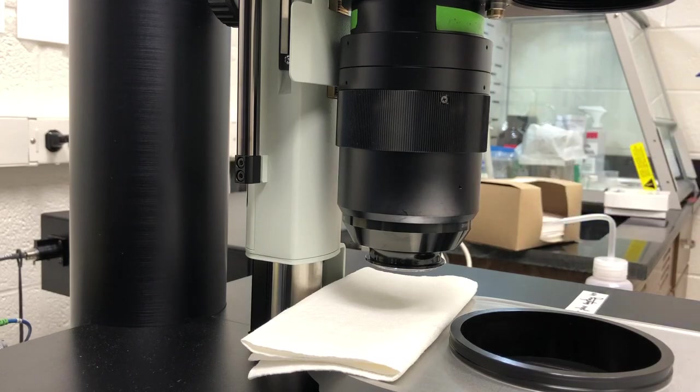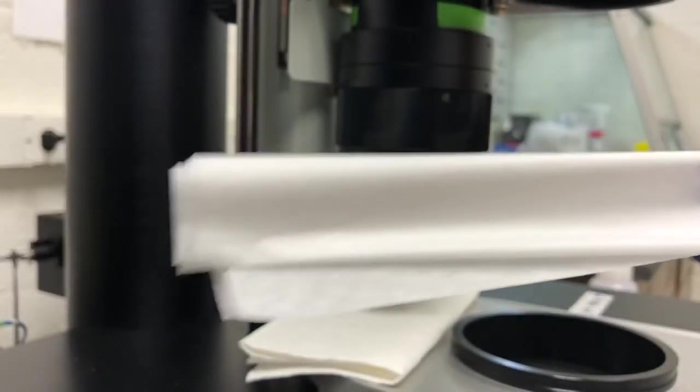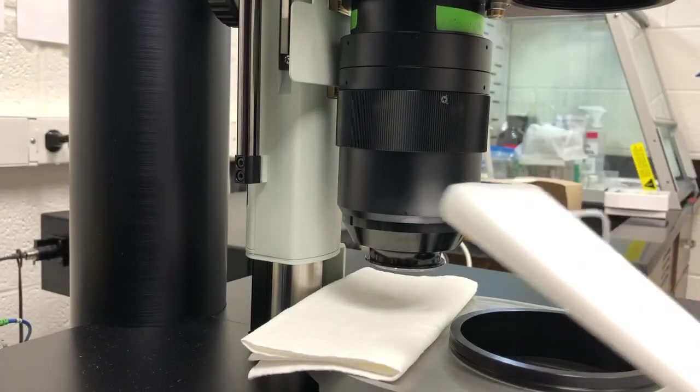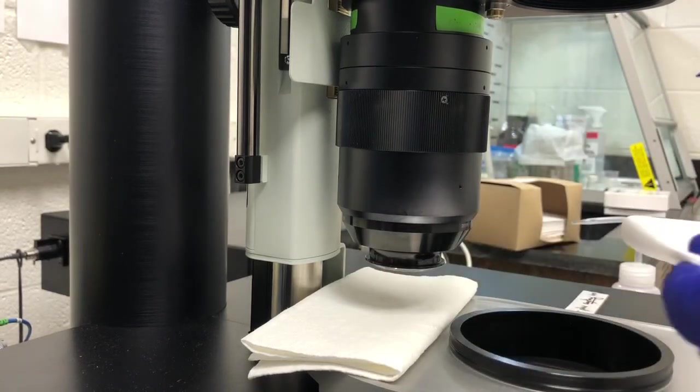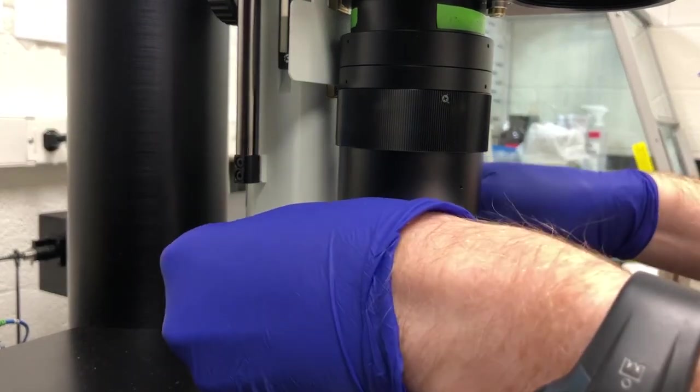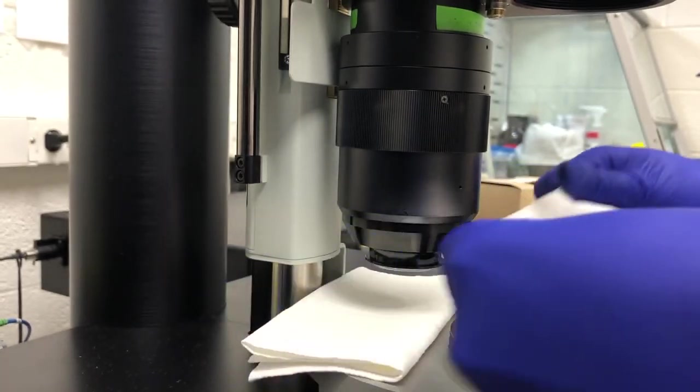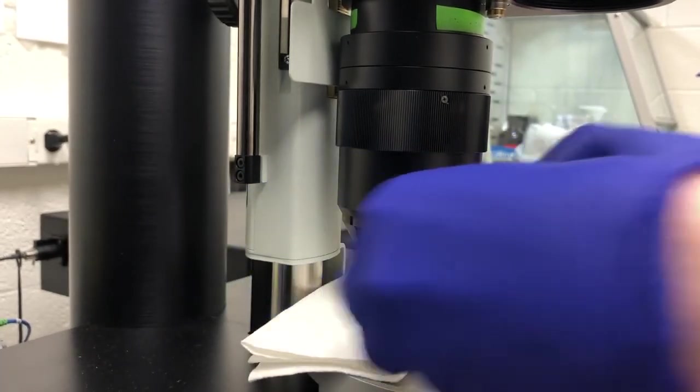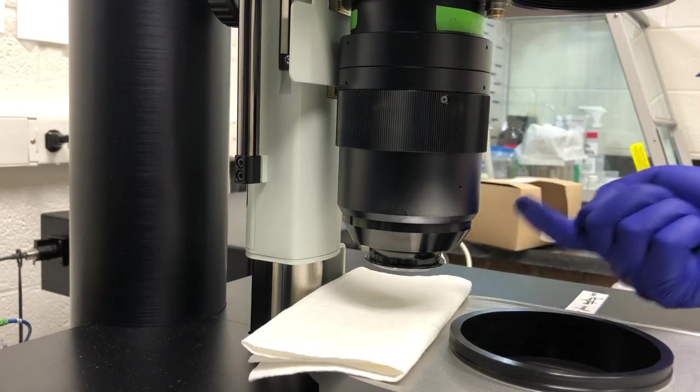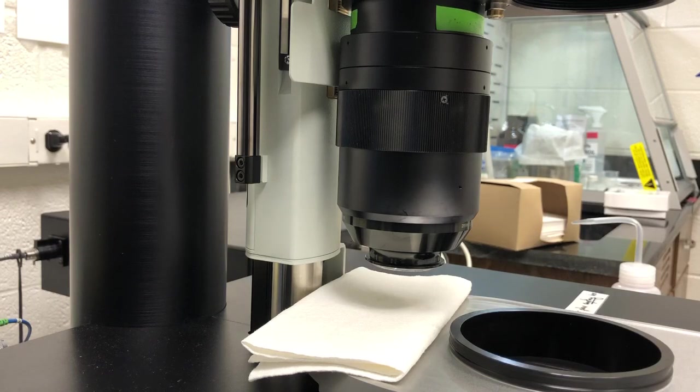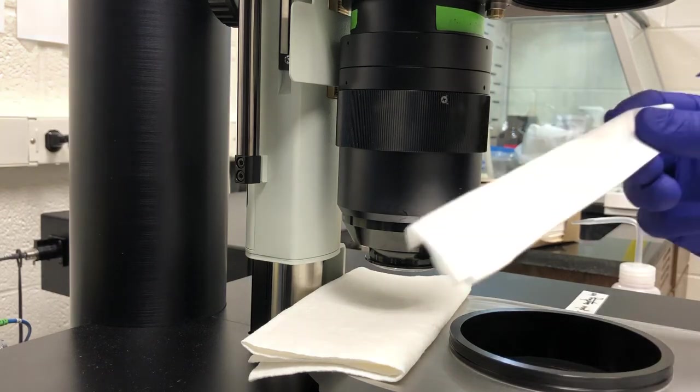The next step is to grab lens paper again, fold it, but instead of using it dry, now we're going to put a little bit of ethanol on it and swipe it across. When you're actually on the system at this point you can lean down and look at it from here and see if it's clean. If it's not just repeat this step.